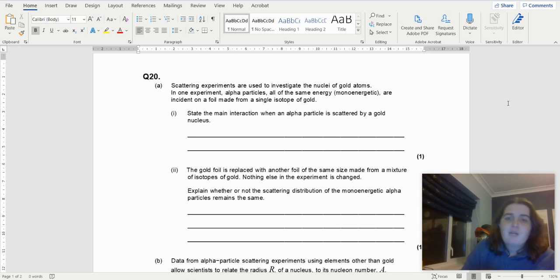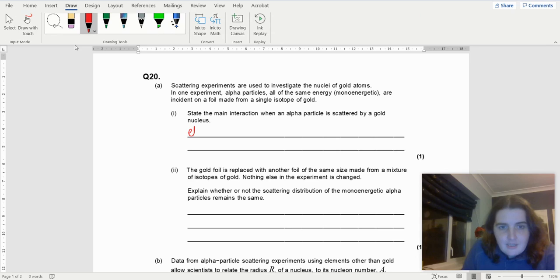So the main interaction when an alpha particle is scattered by a gold nucleus. What's happening is an alpha with a charge of positive 2 is basically smacked into a 79 proton positive nucleus, and you get a repulsion. So state the main interaction. It's an electrostatic interaction. So this is important, it's electrostatic interaction.